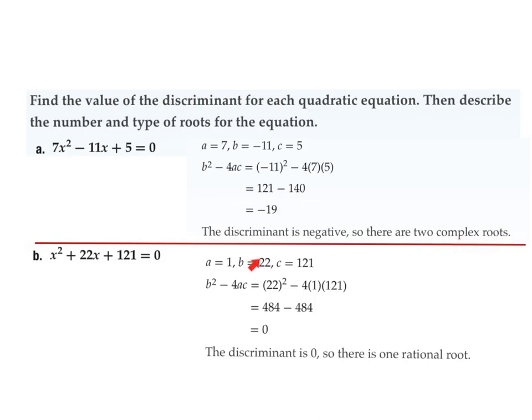For the second one, the discriminant ended up being zero, which means there is one rational root. The plus or minus then sort of and the radical don't even apply anymore because plus or minus zero. So for all intents and purposes, when the discriminant is zero, the solution is negative b over 2a.